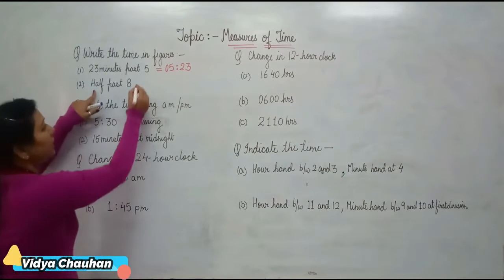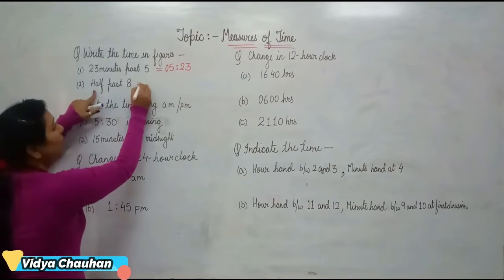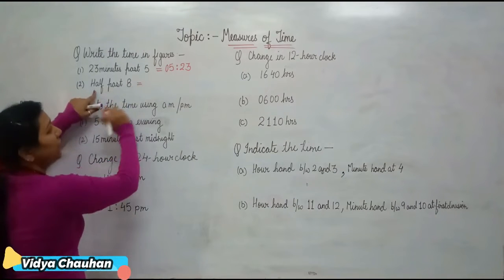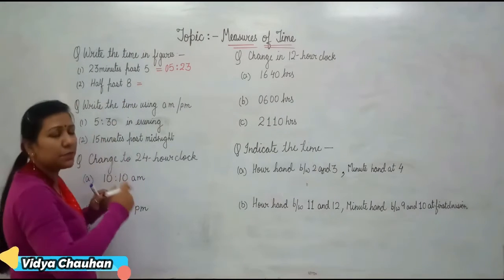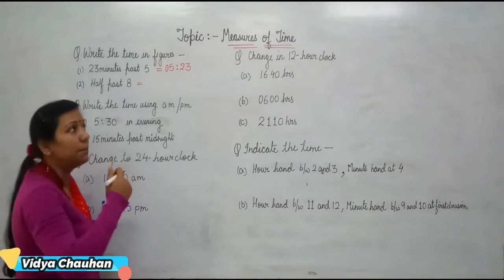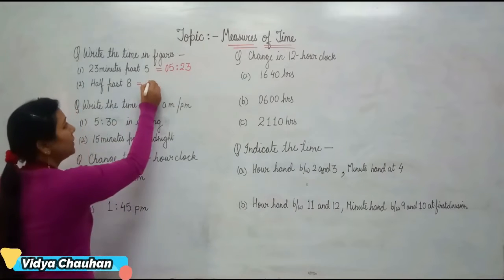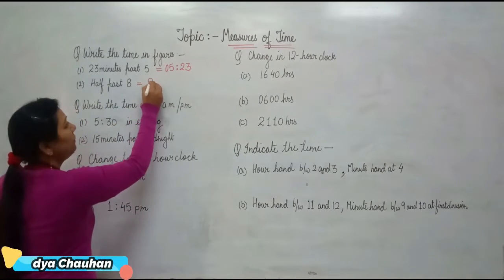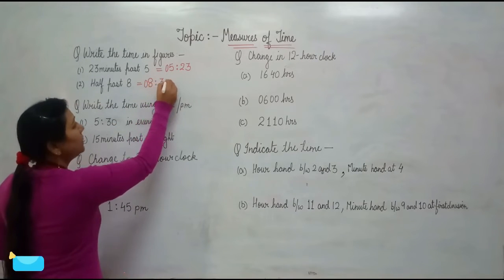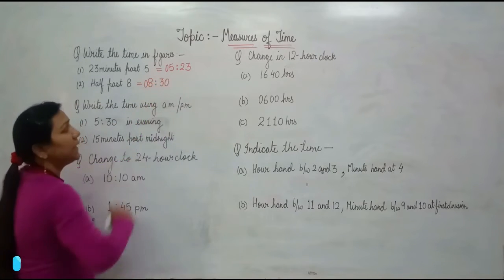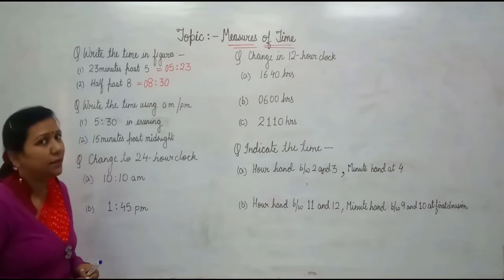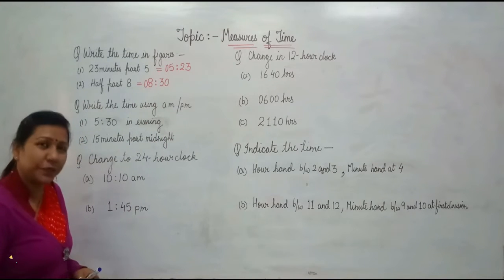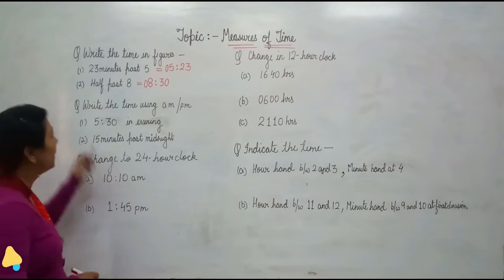The second one: half past 8. Half past means 30 minutes past. So your time will be 08 in hours and 30 minutes. So your time is 8:30. Clear, students?